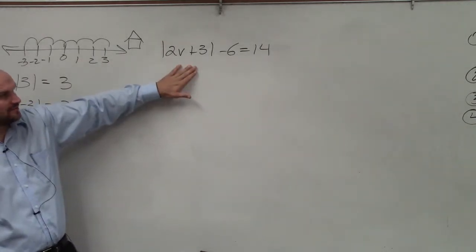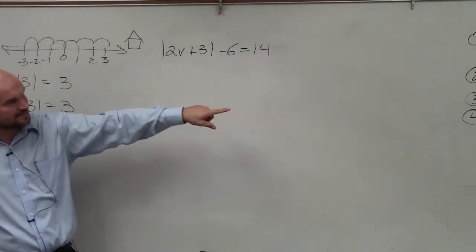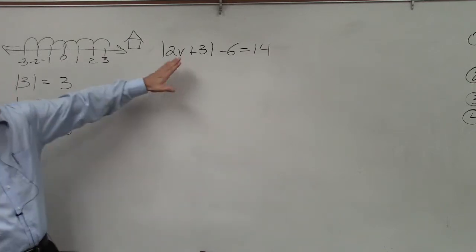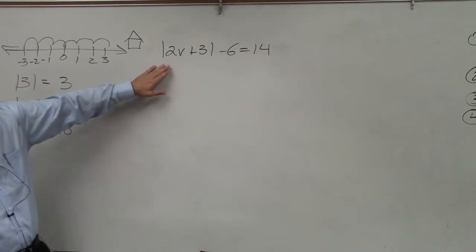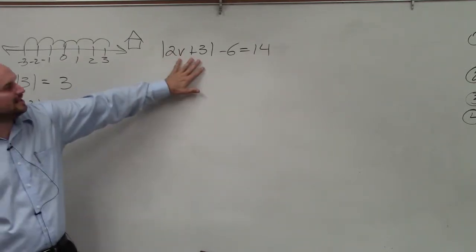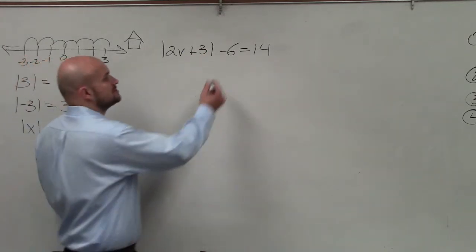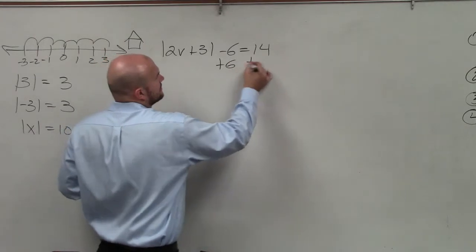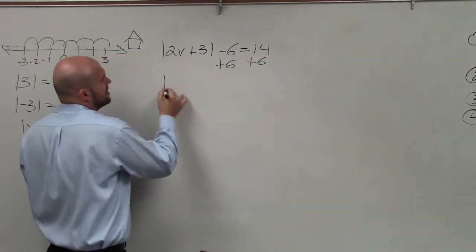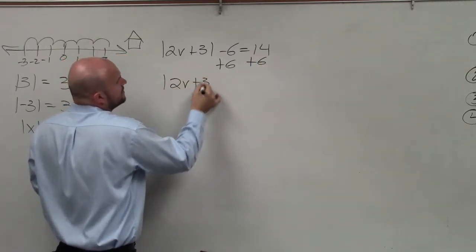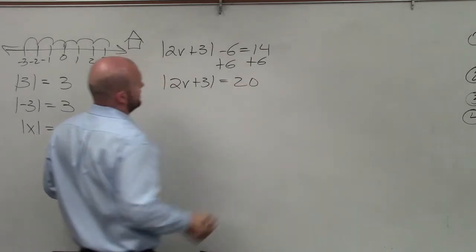So when we solve an absolute value equation, you can see I wrote down the steps over there, which I'd highly recommend. The first step is isolate the absolute value sign. Here we have the absolute value sign being subtracted by 6, so we need to undo subtracting by 6 by adding 6. So I have absolute value of 2v plus 3 equals 20.